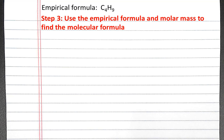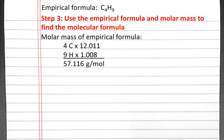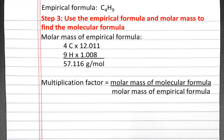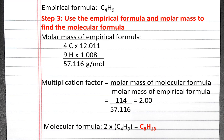Using the empirical formula and the molar mass of the hydrocarbon, we can determine the molecular formula. First, we calculate the molar mass of the empirical formula: 4 carbons and 9 hydrogens gives 57.116 grams per mole. To find the multiplication factor, we divide the molar mass of the molecular formula by the molar mass of the empirical formula: 114 divided by 57.116 equals 2. So our molecular formula is twice our empirical formula, which is C8H18.